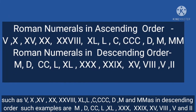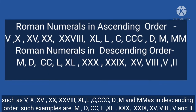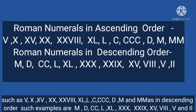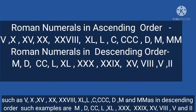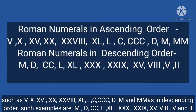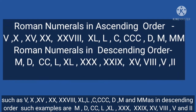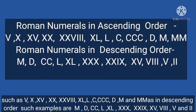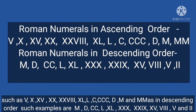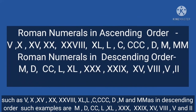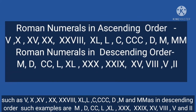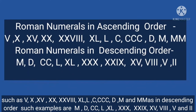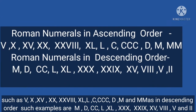In descending order, examples are: M=1000, D=500, CC=200, L=50, XL=40, XXX=30, XXXIX=29, XV=15, VIII=8, V=5, and II=2.